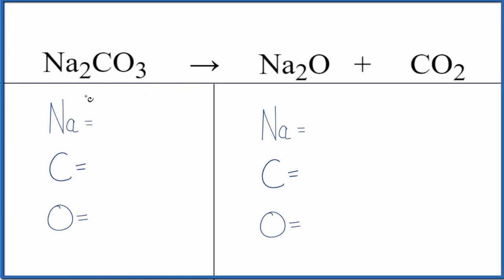Let's balance the chemical equation for the decomposition of Na2CO3, and it's decomposing into Na2O plus CO2. So we have sodium carbonate, this is sodium oxide, and this is carbon dioxide.